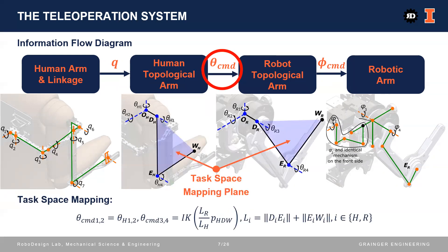For task space mapping, we chose an approximate approach for guarantee of feasibility of commanded trajectories. We joint space teleoperated the first two joints and task space teleoperated the last two joints in a plane formed by the topological arm's upper arm and forearm, where the arm is simply a planar two-degree-of-freedom manipulator.